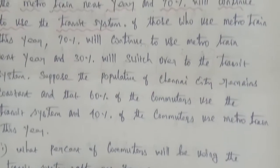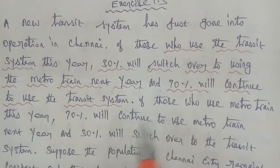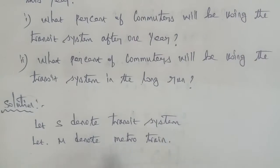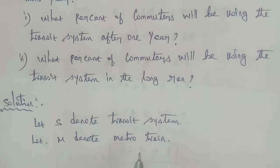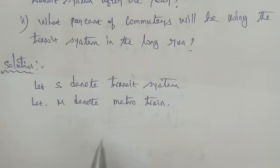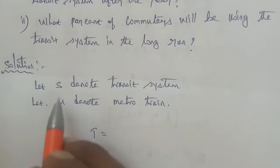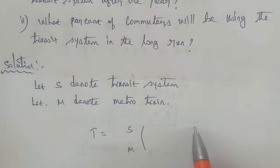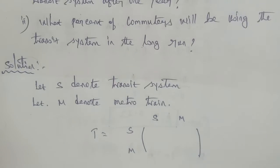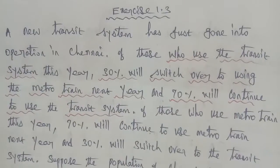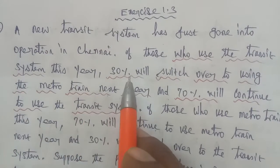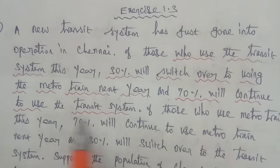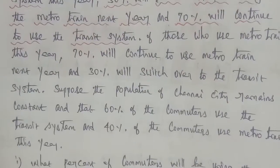So, let S denote the transit system and M denote the metro train. Capital T will be the transition matrix, where S represents the transit system and M represents the metro train.